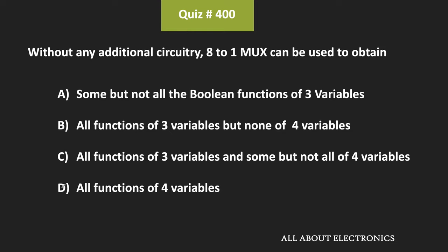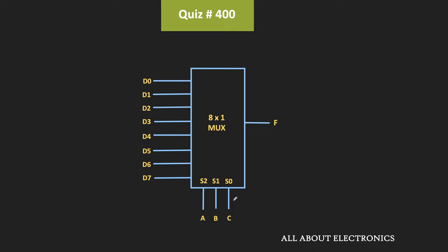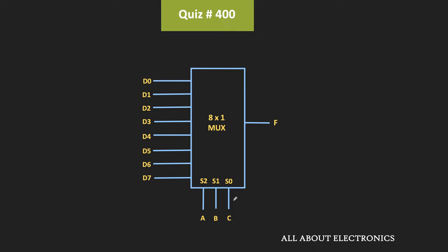This next question is similar to the earlier one. We have been given that without using any additional circuitry, using only an 8-to-1 mux, which boolean functions can we implement? The 8-to-1 mux has three selection lines. If we apply three variables to the three selection lines, each input represents a particular minterm, and by connecting each data line to either 0 or 1, we can select a particular minterm.